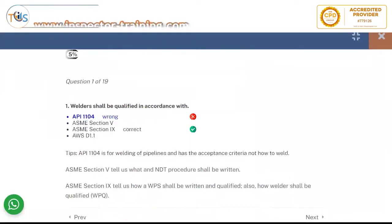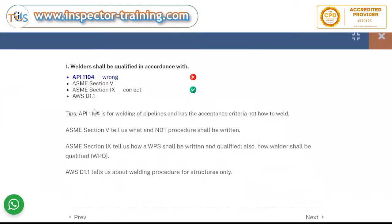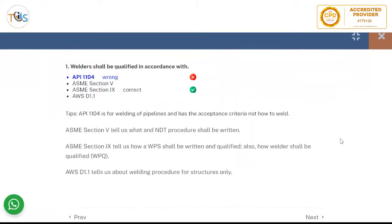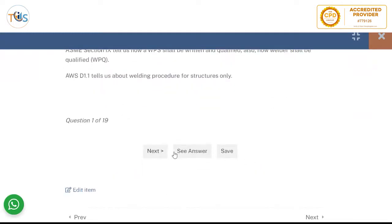So question number one. Welders shall be qualified in accordance with ASMA section nine. And remember section five is for NDT procedures. AWS D1.1 is for structural welding code. And API 1104 is for welding of pipelines. And it doesn't give you the welder performance qualification or welding procedure specification. It gives you the acceptance criteria.